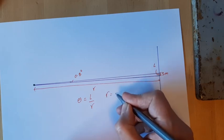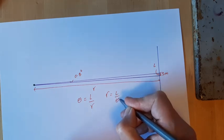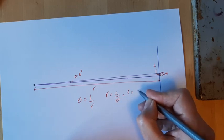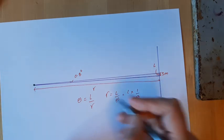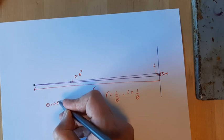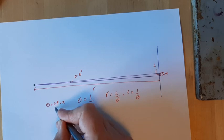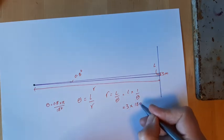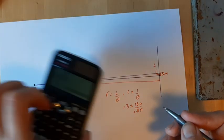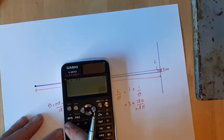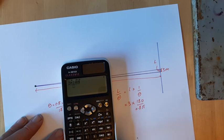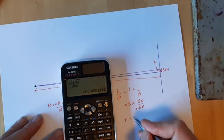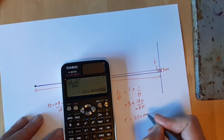R is equal to L over theta, which is exactly the same as L times 1/theta. Theta is 0.8 degrees, and to convert to radians we multiply by π and divide by 180. So we flip that over and get 3 × 180 / (0.8π). Putting that in the calculator: 3 × 180 on top, and 0.8 × π on the bottom gives us a distance to the tree of, to two significant figures, 210 metres.